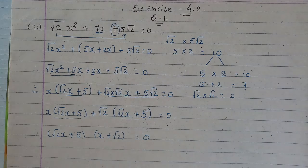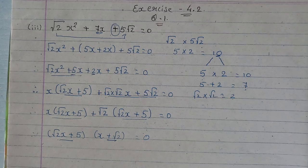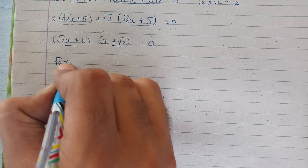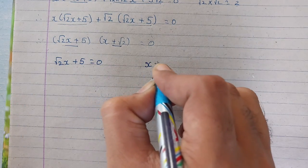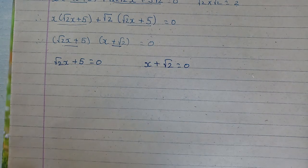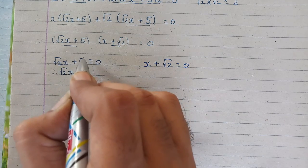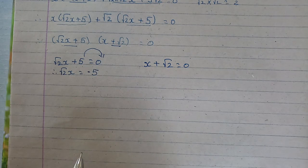That is equal to 0. Now, equate both brackets one by one to 0. So, first bracket will be root 2 x plus 5 is equal to 0. The second bracket is x plus root 2 is equal to 0. Now, root 2 x will remain as it is, take this 5 to the right hand side and it will become negative. So it is minus 5.